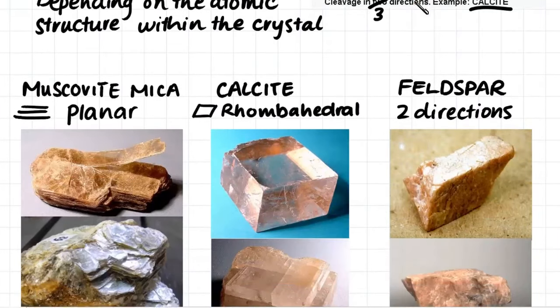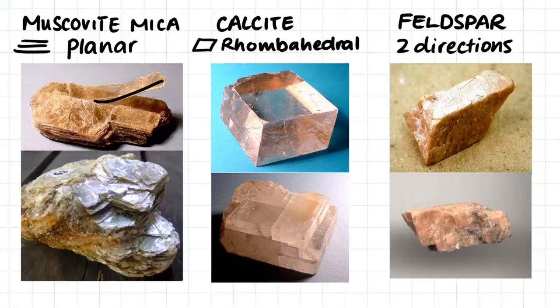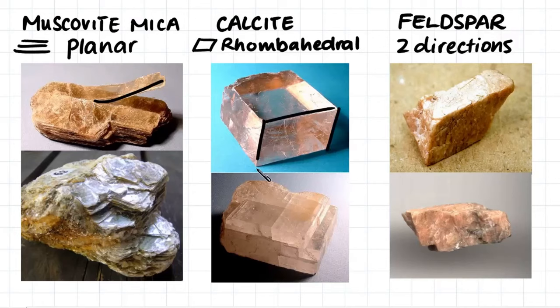Here are some more examples of what we've just been looking at. Muscovite mica, as I said, will crack off in sheets. Calcite, as I said, will form rhombohedral shapes. And feldspar presents cleavage in two directions, however the third direction will be unknown.